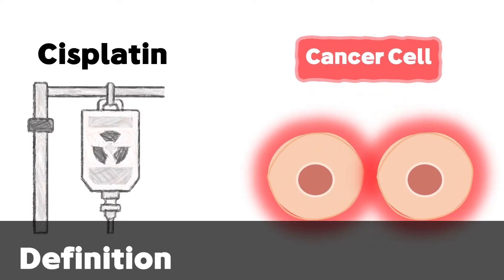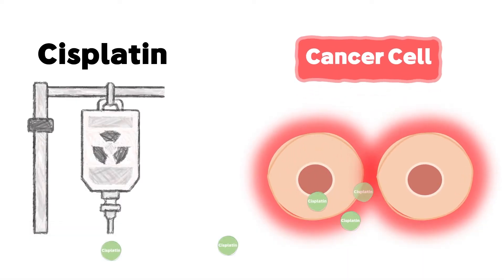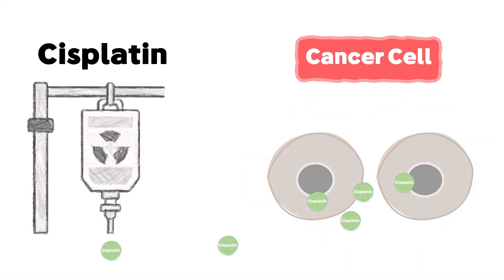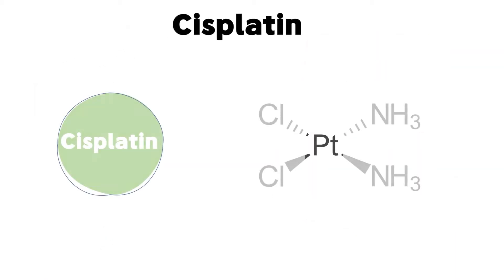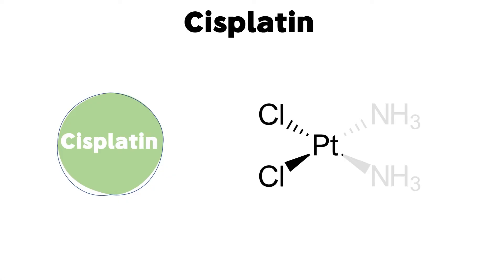So what is cisplatin? Cisplatin is one of the chemotherapeutics that can effectively kill cancer cells. Its chemical structure is simple: it has a central platinum element with two chloro groups on one side and two amino groups on the other.